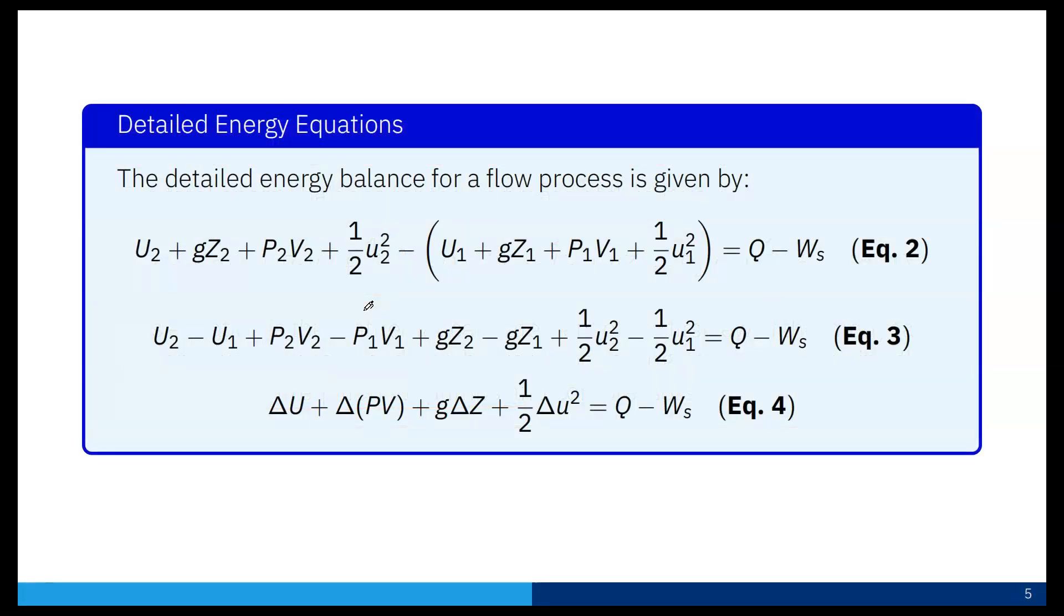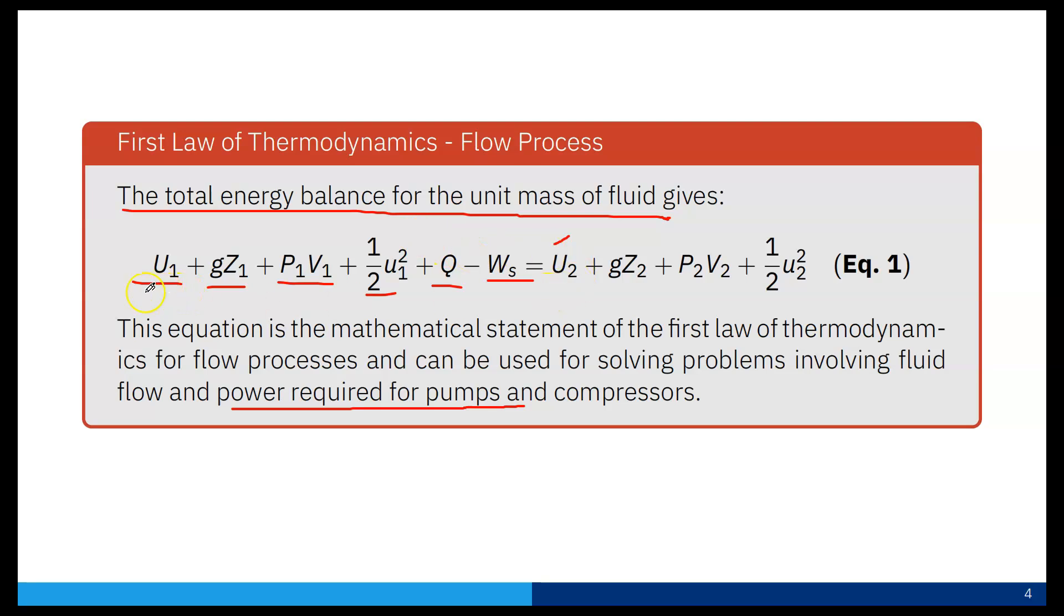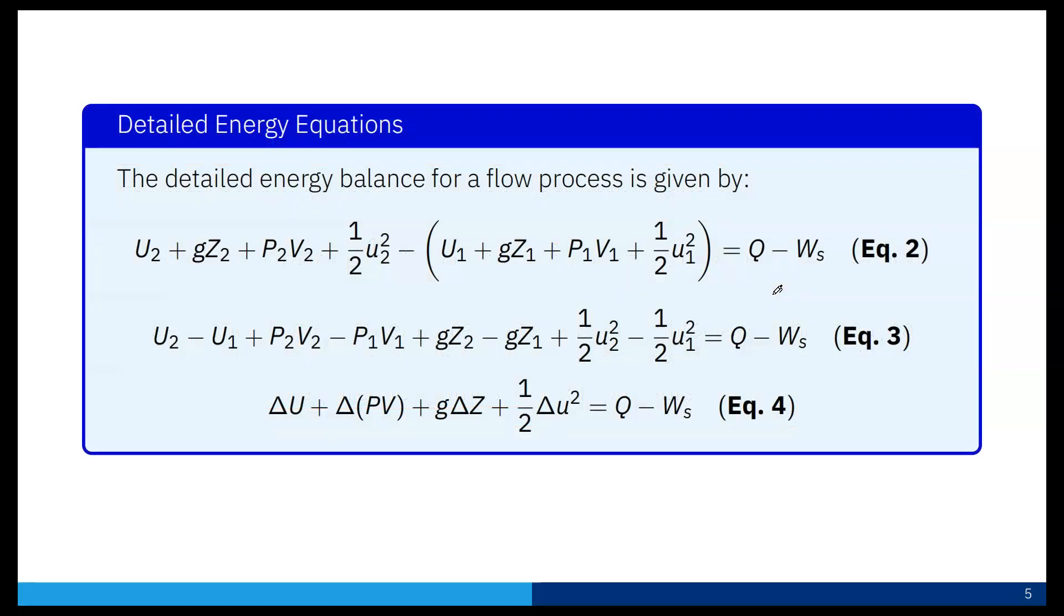If I reorganize this equation by taking terms to the right-hand side: U₂ + gz₂ + P₂V₂ + ½u₂² minus (U₁ + gz₁ + P₁V₁ + ½u₁²) equals Q - Ws. This becomes: U₂ - U₁ + P₂V₂ - P₁V₁ + gz₂ - gz₁ + ½u₂² - ½u₁² equals Q - Ws.